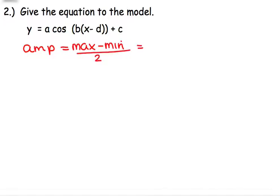So the maximum was 20 up. The minimum was 20 down. So negative, negative turns this to a positive 40, divided by two is 20.